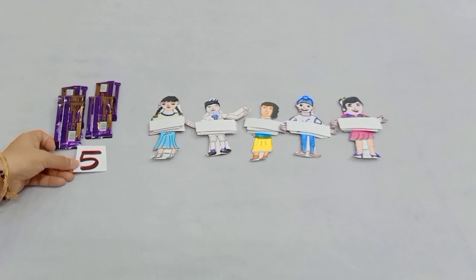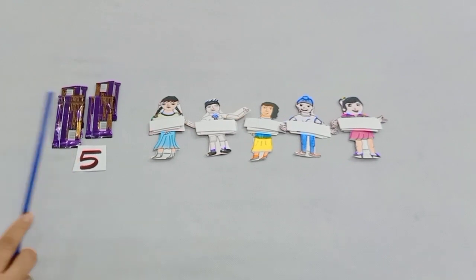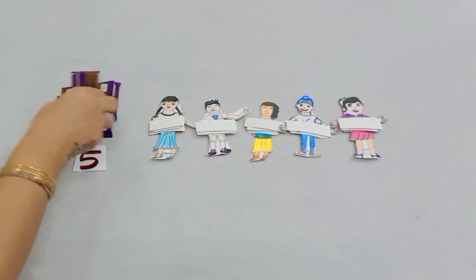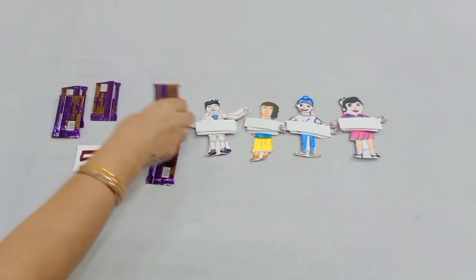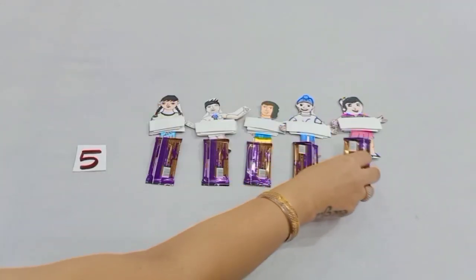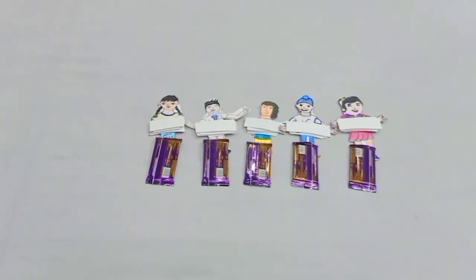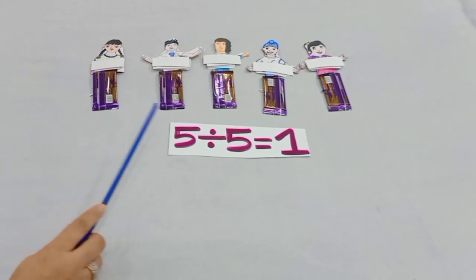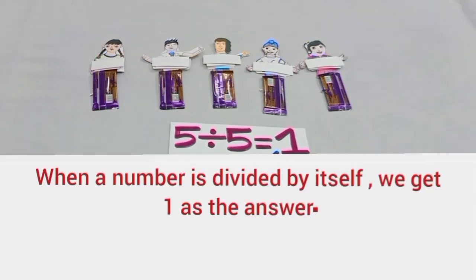Now, I am having 5 chocolates and I have to divide these 5 chocolates among these 5 children equally. So, you can see after dividing equally, each child got 1 1 chocolate. It shows when 5 is divided by 5, the answer is 1. That means when a number is divided by itself, we get 1 as the answer.